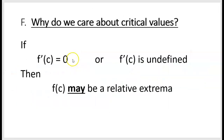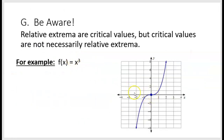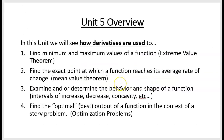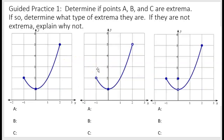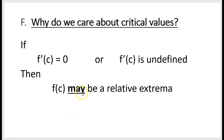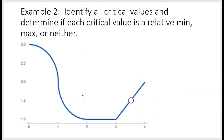So critical values are not always relative extrema, but relative extrema will always be critical values. That's why we care about critical values: they help us find where possible relative extrema are. Finding a place where the derivative equals 0 or is undefined may tell you where a relative extrema exists — and that's one of the things derivatives are used for: finding the minimum and maximum values of a function.